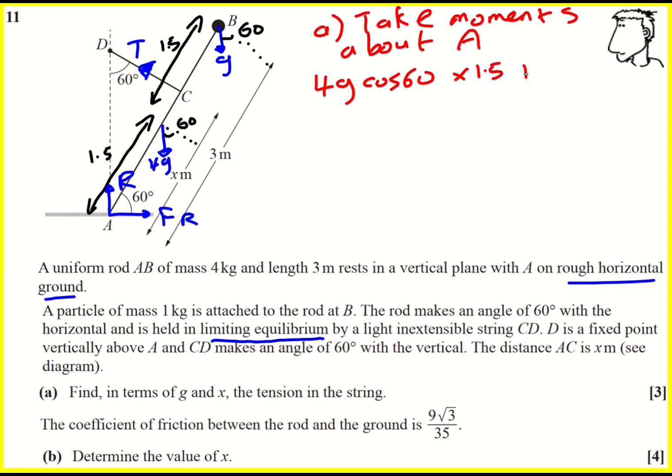So cos 60, don't forget to times by, in this case, 1.5, plus G cos 60, for very similar reasons, times by 3, is going to equal the tension, which is at right angles, so that's all good, multiplied by x.